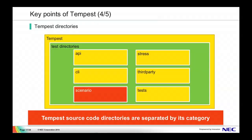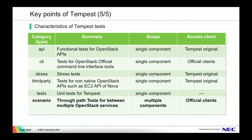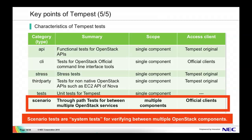The Tempest source code directory is separated by each category. Scenario tests are system tests for verifying interactions between multiple OpenStack components. Other category tests are not suitable for implementing complicated scenarios between multiple components because they are aimed at validating a single component.